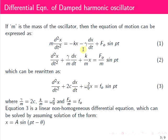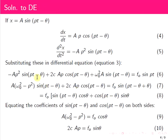We substitute these terms into equation 3. We get: minus Ap² sin(Pt − θ) plus 2cAp cos(Pt − θ) plus ω₀²A sin(Pt − θ) equals F₀ sin(Pt). We can combine the terms involving sin(Pt − θ) and cos(Pt − θ) on the left-hand side. On the right-hand side, F₀ sin(Pt) can be rewritten as F₀ sin((Pt − θ) + θ), expanded using sin(A + B) = sin A cos B + cos A sin B, giving F₀[sin(Pt − θ)cos θ + cos(Pt − θ)sin θ].